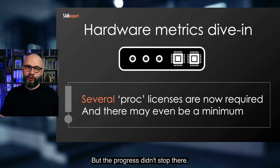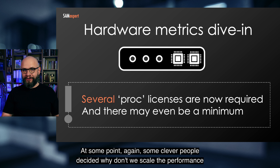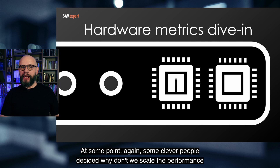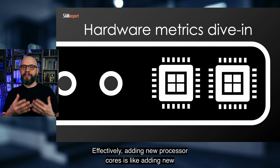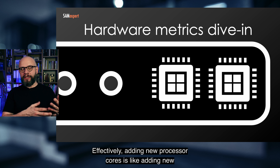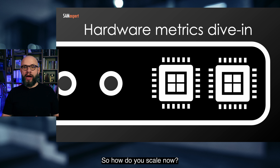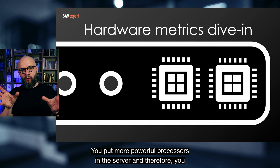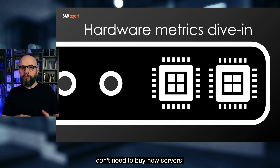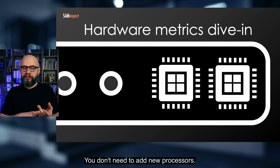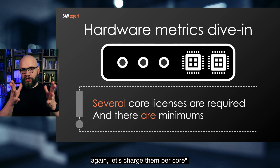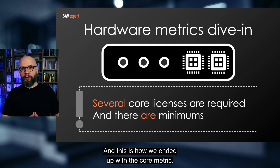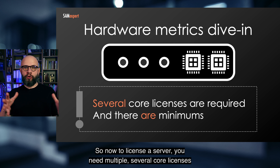But the progress didn't stop there. Again, some clever people decided, why don't we scale the performance of servers by adding processor cores? Effectively, adding new processor cores is almost like adding new processors. So now you put more powerful processors in the server, and you don't need to buy new servers or add new processors. Software vendors looked at that and said, we're losing revenue again — let's charge them per core. And this is how we ended up with the core metric. Now to license a server, you need several core licenses.